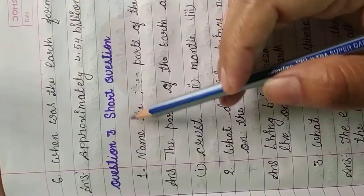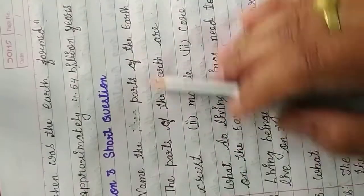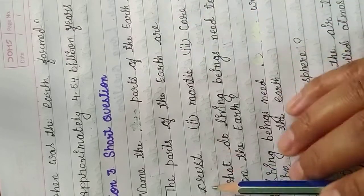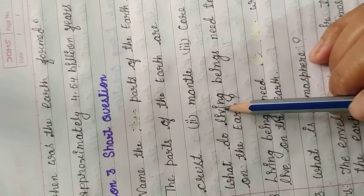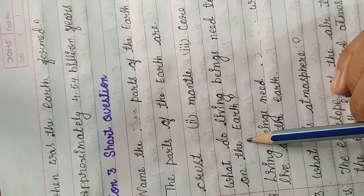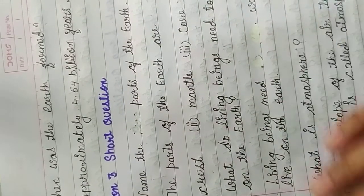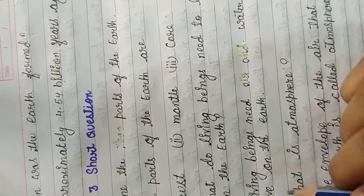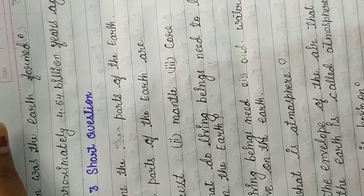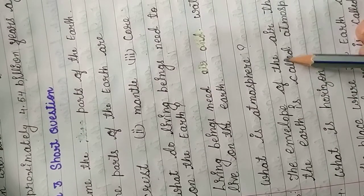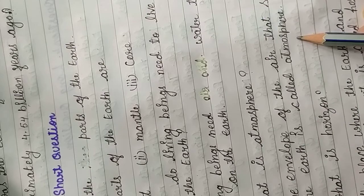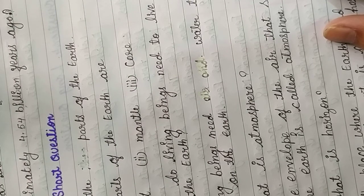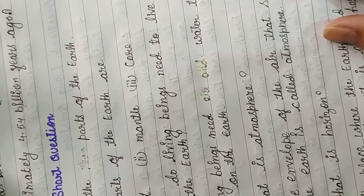Short questions: Name the parts of the Earth. The parts of the Earth are crust, mantle and core — हमने Earth को 3 parts में divide किया था। What do living beings need to live on Earth? Living beings need air and water. What is atmosphere? The envelope of air that surrounds the Earth is called the atmosphere.